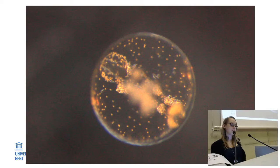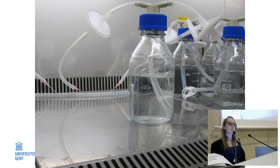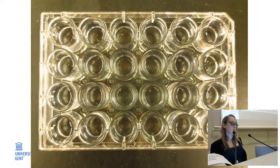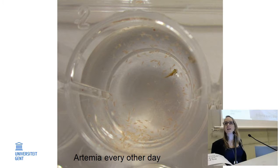We disinfected the fertilized fish eggs with hydrogen peroxide to avoid bacterial overload. We placed these eggs in glass bottles containing sterile seawater and connected to an air pump. Two days post hatching, we placed the individual larvae in 24-well plates, each well containing one individual. The water was exchanged every other day, and starting from six days post hatching, the larvae were fed ad libitum with sterile Artemia nauplii.